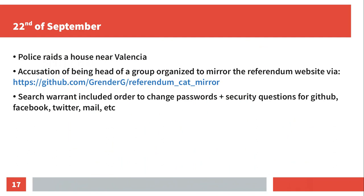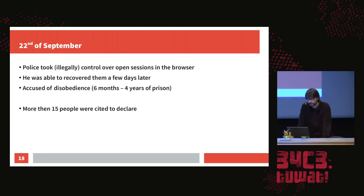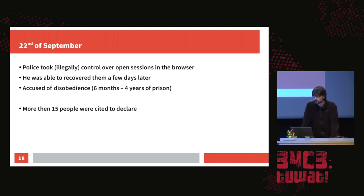On the 22nd of September, police raided a house near Valencia, accusing a man named Daniel Morales of being the head of a group that organizes mirrors of the referendum websites — and he did this with his GitHub repository. Note that Valencia is outside Catalonia. The search warrant literally included instructions to change passwords and security questions for GitHub, Facebook, Twitter, mail, et cetera. When police entered his house, his computer was turned on, so they were able to take over browser sessions — specifically his Google account and GitHub account.